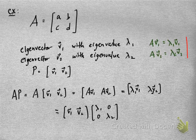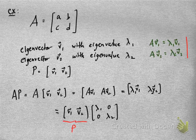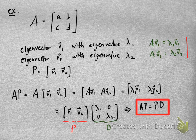I can write that as a matrix product. The first matrix is going to be the matrix with columns V1 and V2, and the second will be this diagonal matrix with the eigenvalues on the main diagonal. I'll call that P, and this one is going to be a diagonal matrix D. So I get that A times P equals P times D, where P is this invertible 2 by 2 matrix, and D is a diagonal 2 by 2 matrix.